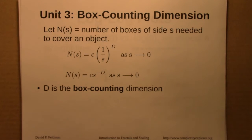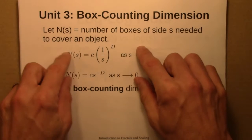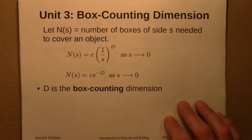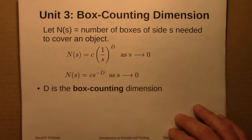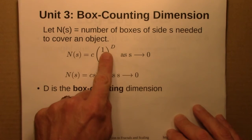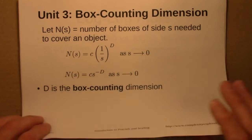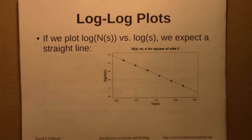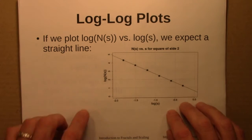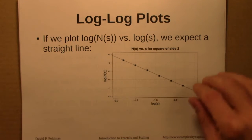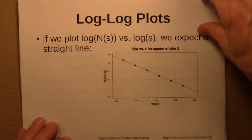In Unit 3, we looked at the box counting dimension. We looked at the number of boxes of a certain side needed to cover an object, and asked how does that change as the box size changes — and that leads to the idea of the box counting dimension. This is a tedious but more concrete way of thinking about how you might define and calculate a fractal dimension. It was also in this unit that we saw our first instance of log-log plots: if we plot the number of boxes versus the box size, we see a straight line, something we saw again and again throughout the course.